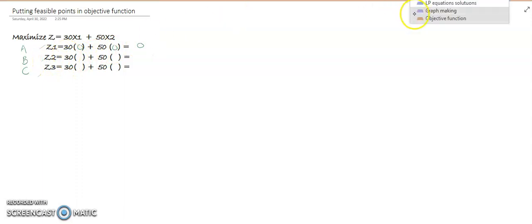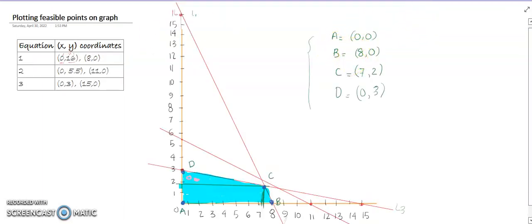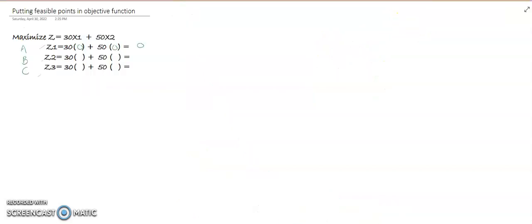Corner point A is 0,0. If you put 0 and 0, it gives us 0 profit. The second corner point B: we have to put 8 and 0, and this will become 30 by 8 and 50 by 0.